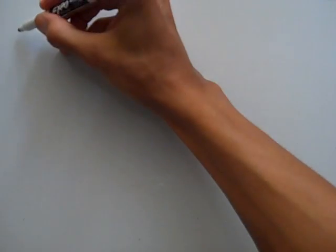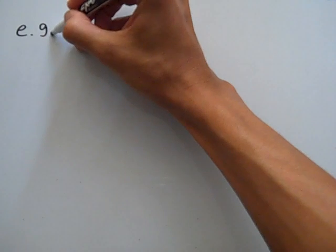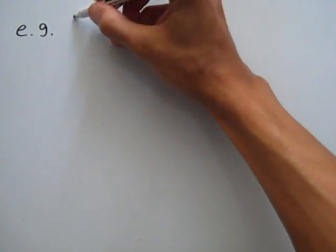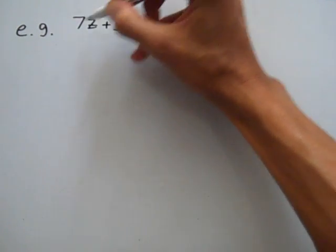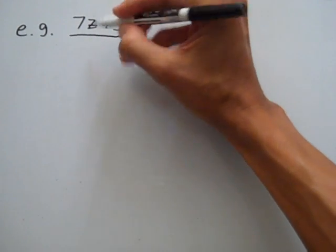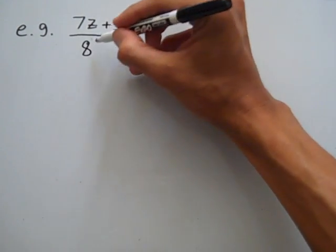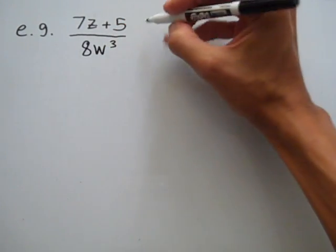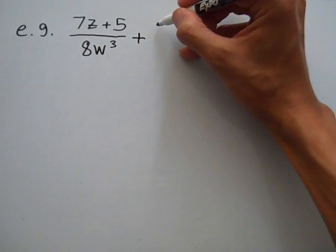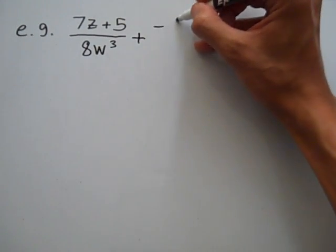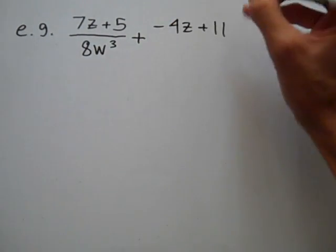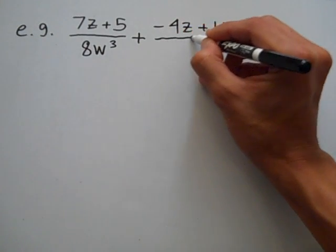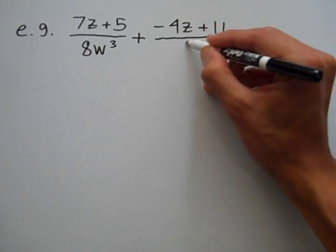Suppose I want to add two algebraic fractions that have the same denominators. For instance, suppose I want to add 7z plus 5 over 8w cubed, and to that I want to add negative 4z plus 11 over 8w cubed.